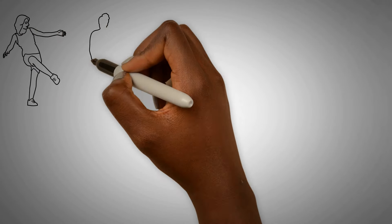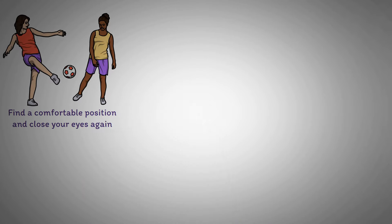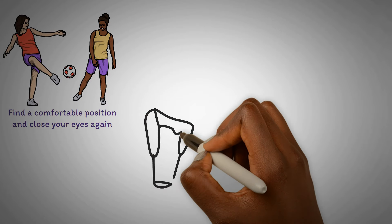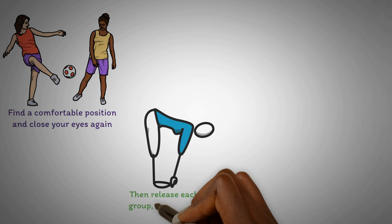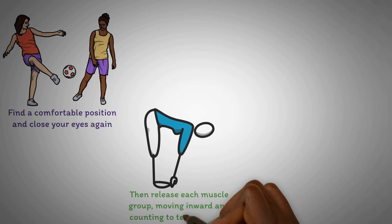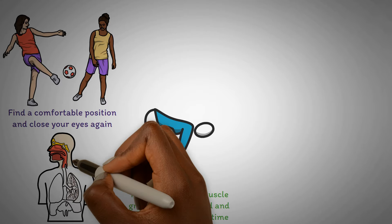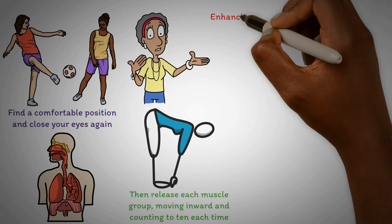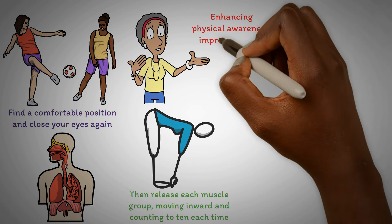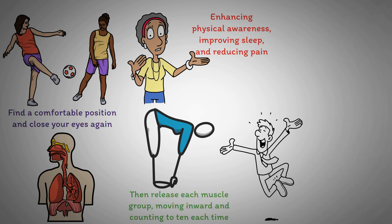Regular practice can help you quickly relax both your mind and body. To incorporate progressive muscle relaxation, PMR, find a comfortable position and close your eyes again. Begin at your extremities, fingers and toes, and gradually tense and then release each muscle group moving inward and counting to 10 each time. Finish with deep breaths and a stretch, feeling the relaxation throughout your body. This technique is excellent for enhancing physical awareness, improving sleep, and reducing pain, guiding your mind away from stress and towards tranquility.